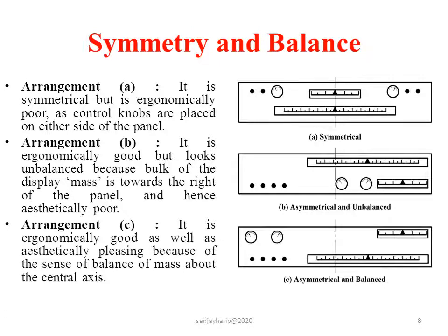Let us see symmetry and balance. Human eyes are conditioned to see things in symmetrical form and tend to reject asymmetrical shapes. Hence, while designing a product, symmetry about at least one axis improves the aesthetic appeal of the product. In some cases, due to functional requirements, asymmetry is demanded. In such cases, balance is important.